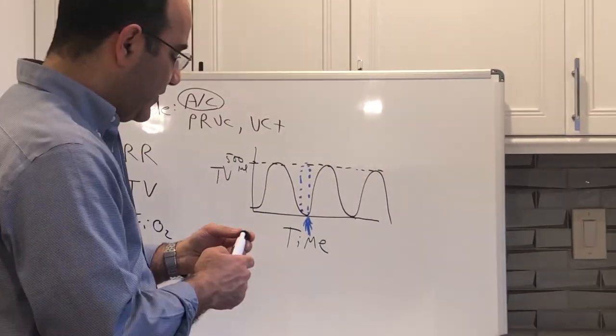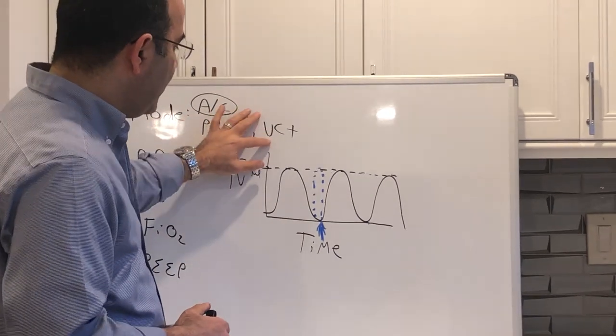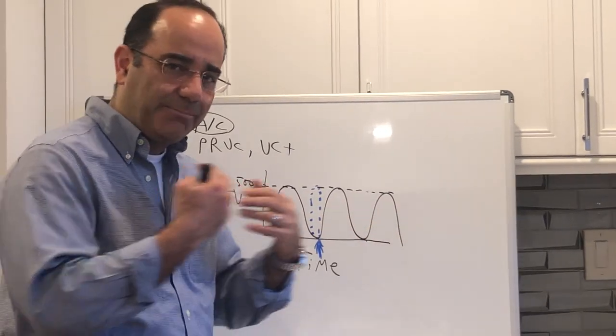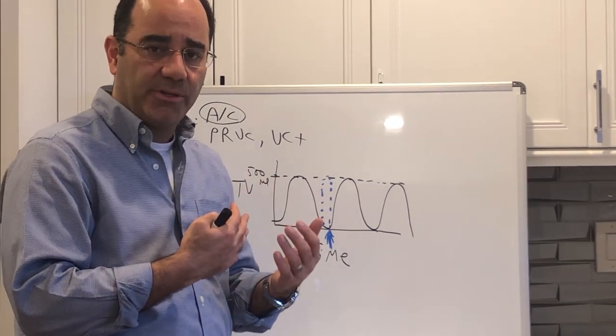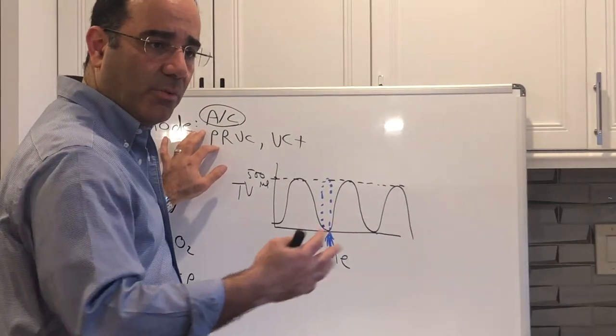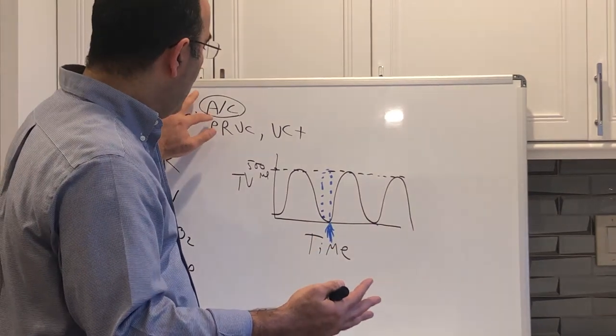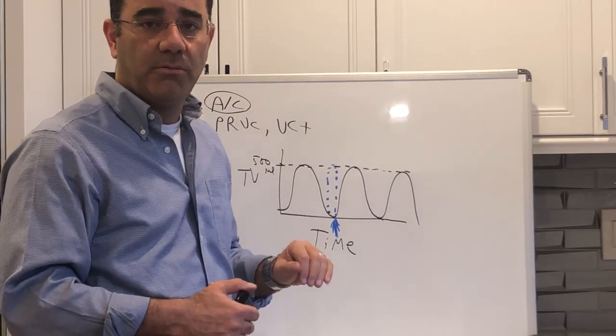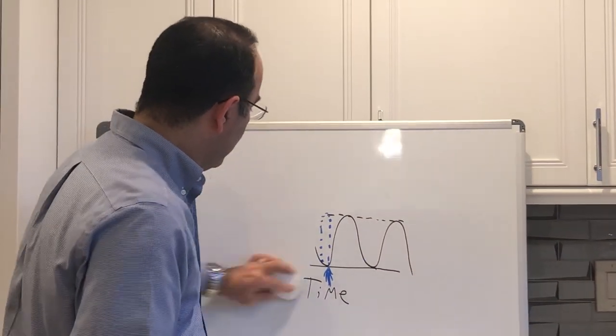You programmed in a respiratory rate of 10, but the patient wants to breathe 14 times per minute. Those additional four breaths will each receive 500 milliliters of air. The benefit of this mode is you're guaranteed to give the prescribed tidal volume. If you're going to PRVC, VC plus, or something else, all that means is you've taken assist control and made the gas flow variable. That creates better patient comfort but otherwise it really has no bearing on outcome.